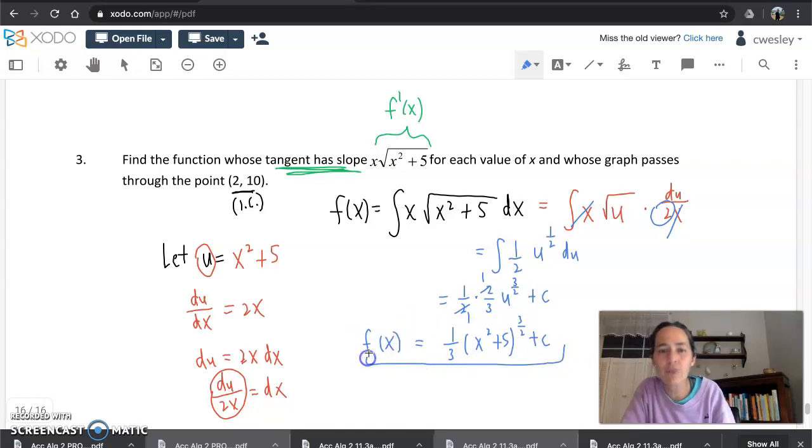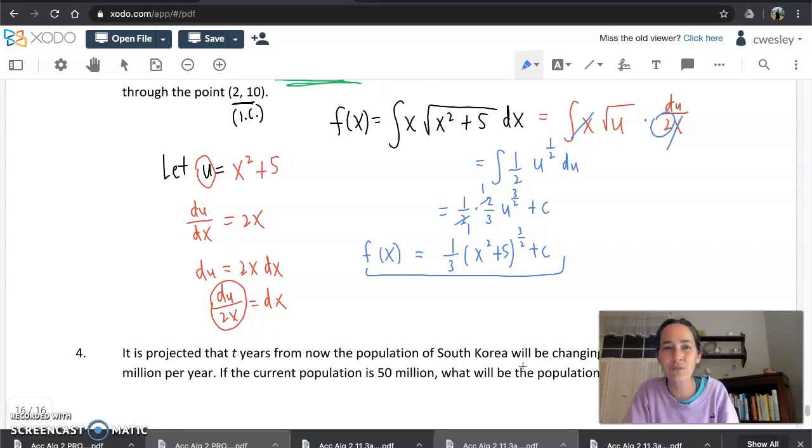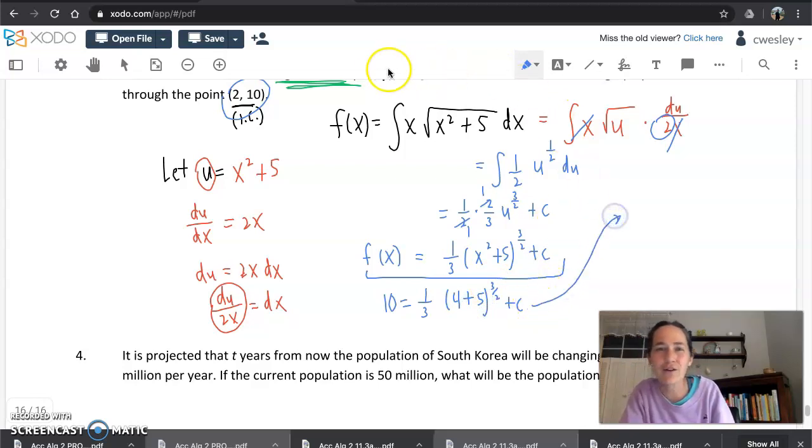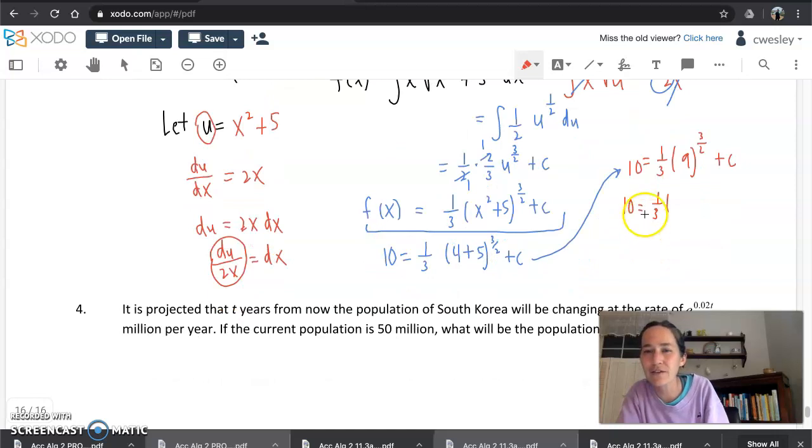But we're not finished. We have enough info in the original to get what c is and make this more of a definitive solution. So we can plug in the point, the coordinates of the point (2, 10). 2 for x and 10 for y. 10 now equals 1/3 of 2 squared, so 4 plus 5 to the 3/2 plus c. I wonder for fun how much of this we can do with no calculator. Thinking of that fractional power. So 10 equals 1/3 times... This is the number 9 to the 3/2 plus c. And think about fractional powers. 9 to the 3/2. We're square rooting the 9 and we're cubing what we get. So we're going to square root the 9 to get 3, cube it to get 27 plus c. We got this. Don't go away. So this is 10. 1/3 of 27. So 27 divided by 3 is just 9 plus c. It's looking like c equals 1. If we plug that back into there, we have our final answer. Final answer is going to be this function with a 1 plugged in for c.